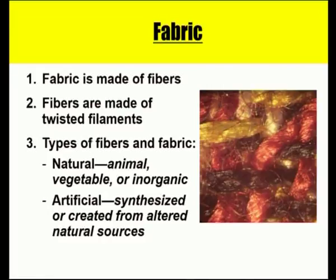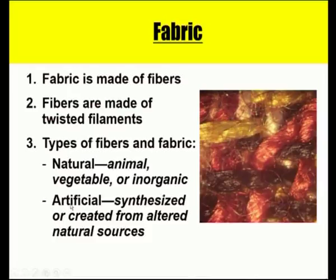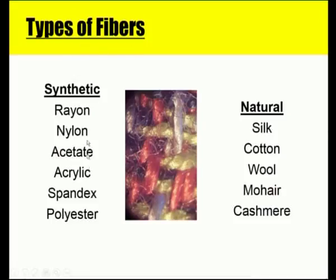An important component is fabric, which is made up of fibers, and fibers are made up of twisted filaments. Types of fibers and fabrics can be classified into two classes: natural and artificial. Natural fibers originate from animals, vegetables, or inorganic materials also known as minerals. Artificial means man-made or synthetic material which can be synthesized or created from altered natural sources — produced in the laboratory.